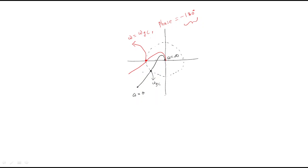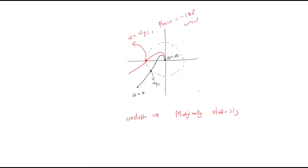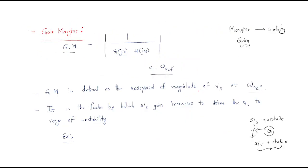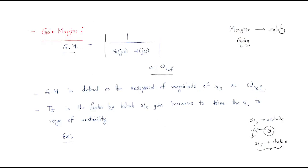Initially this was an unstable system. The unstable system is converted into a marginally stable system. So you have to find the phase margin as 180 plus the phase of GH(jω) at the gain crossover frequency. This is about the phase margin and the gain margin, and both are very important to analyze the stability of the system using the Bode plot.